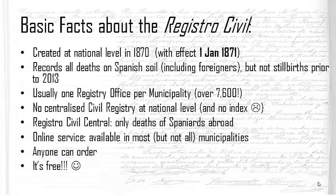The Spanish Registro Civil was created at a national level in 1870 — quite late compared to other European countries such as the UK, where civil registration began in 1837. It came into effect on the 1st of January 1871. If you are looking for a death certificate before that date, you will have to go through other means such as church records. So even though the Registro Civil was created by law in 1870, it became effective as of January 1st, 1871.